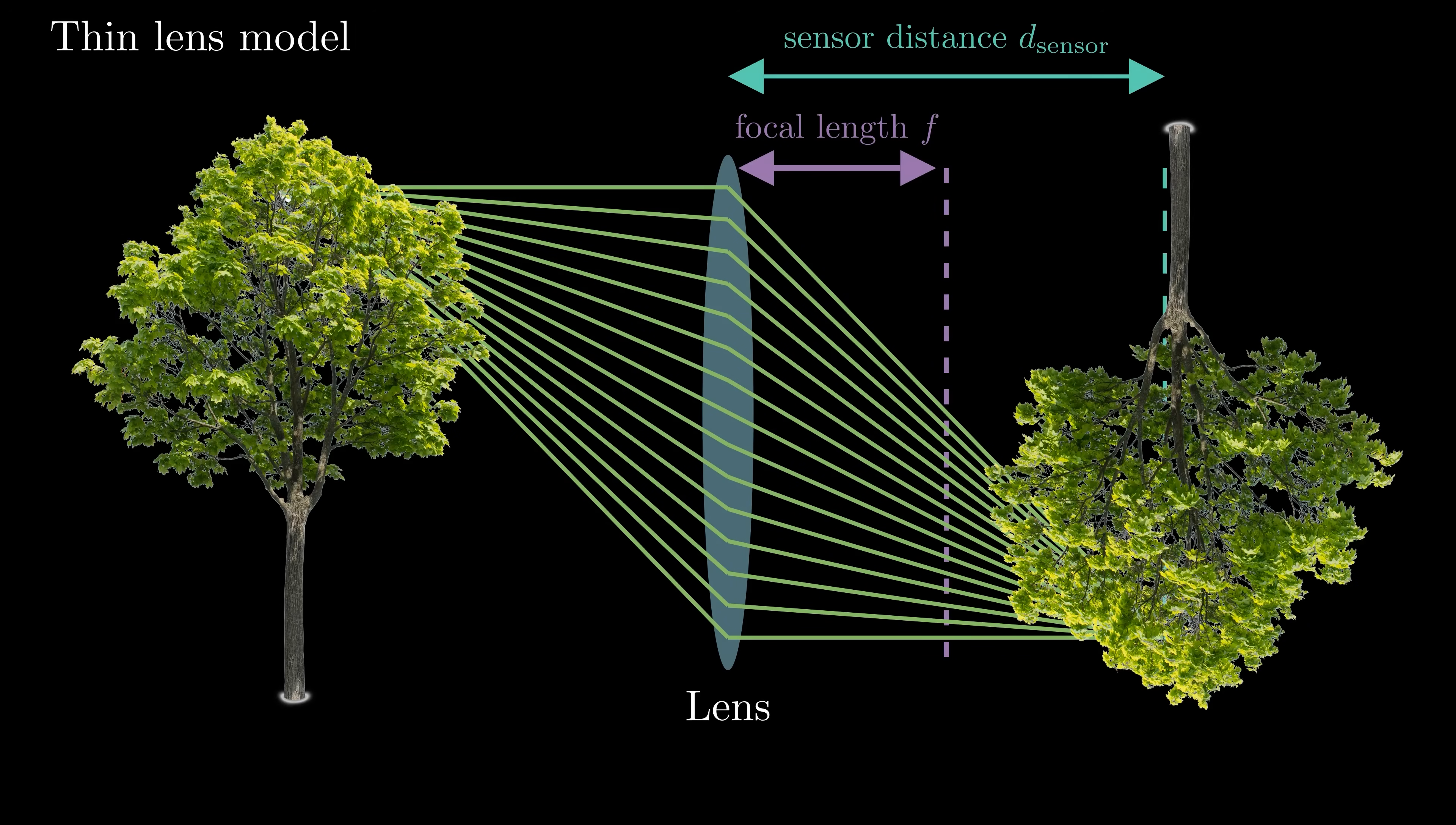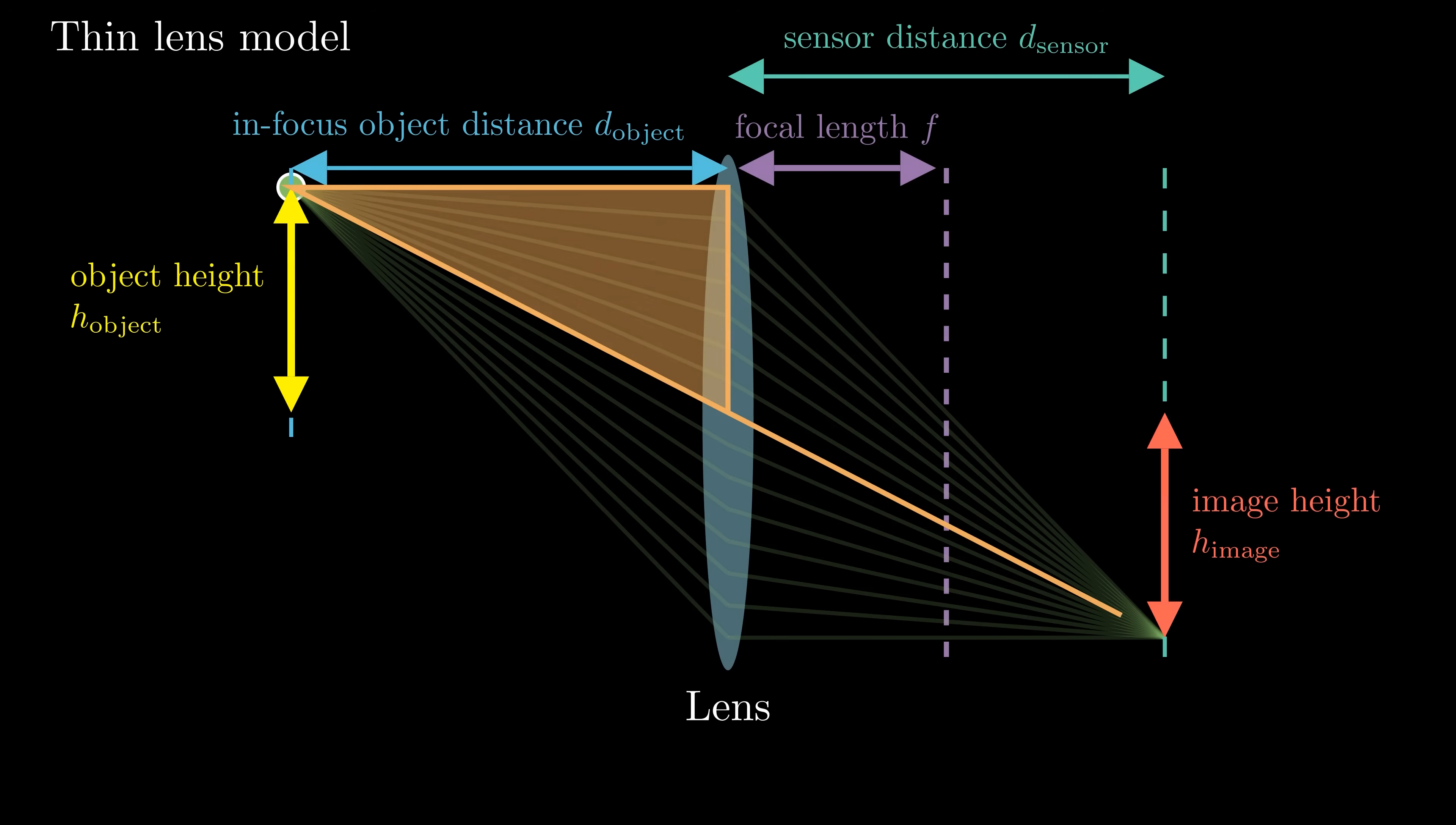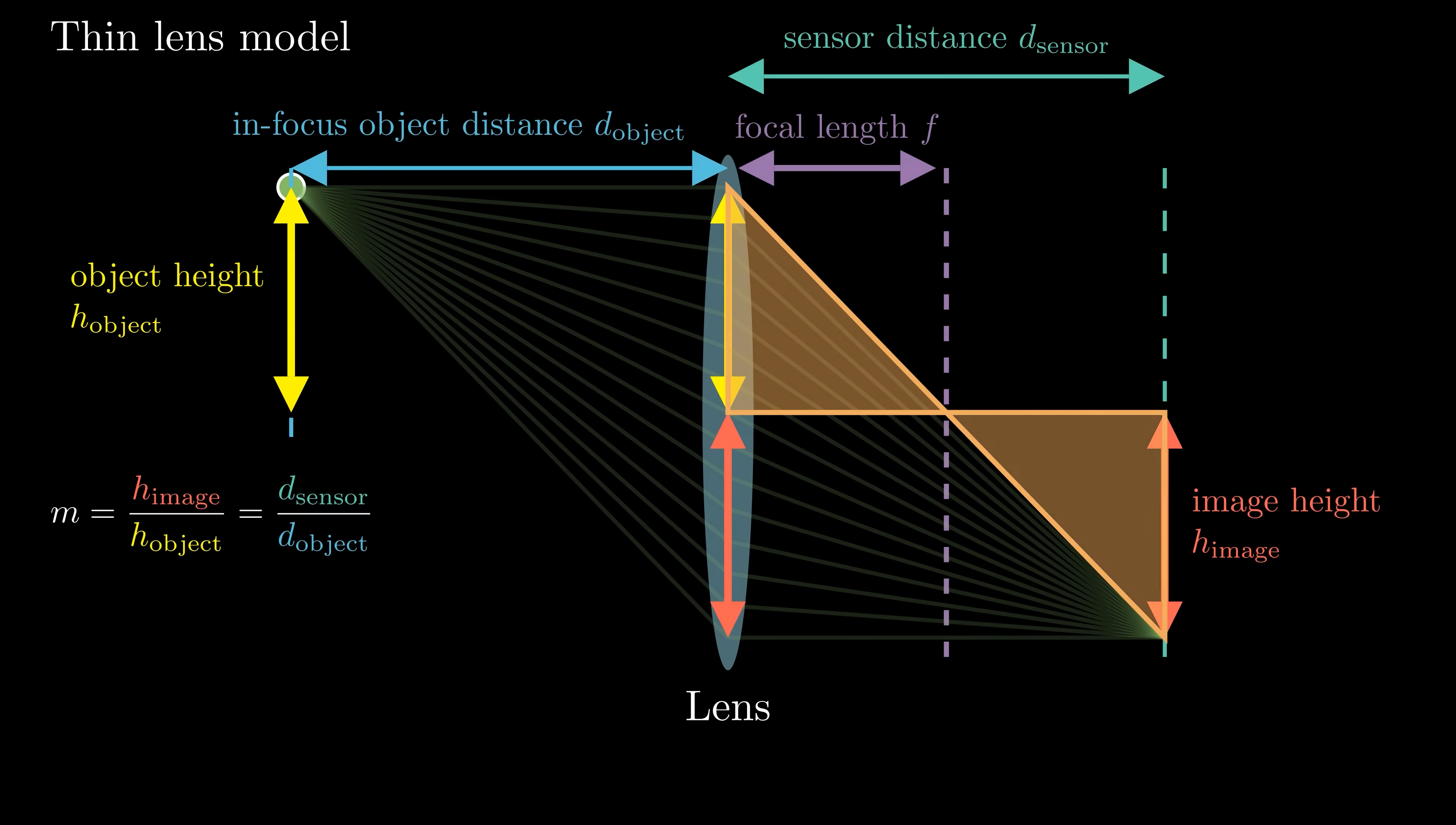Now it's useful to describe the relationship between the object and the resulting image on the sensor. Here we have the object height in the scene and its image height on the sensor plane. To find the relationship between the scene space and image space quantities, we use the concept of similar triangles we learned in high school. This means that the ratio of the image height and the object height is equal to the ratio of the sensor distance to the object distance. We refer the ratio of the image height to the object height as magnification m. Now there's another pair of similar triangles. The magnification m can also be expressed as the ratio of the sensor distance minus the focal length to the focal length f.